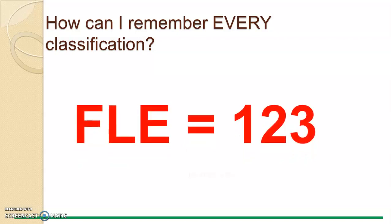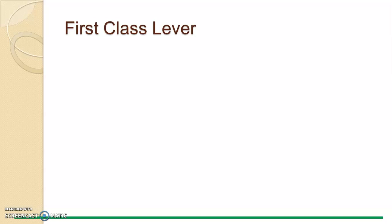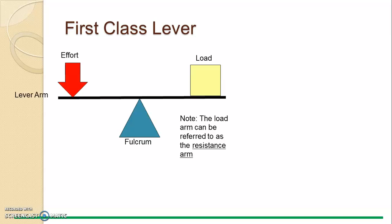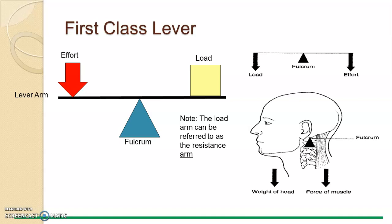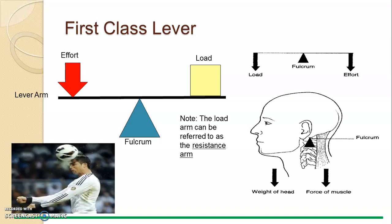And if you thought this, you are correct. F equals 1, 2, 3. All right, so first class lever, fulcrum needs to be in the middle, load and effort on either sides. We use the nodding of the head, the movement of the head forwards and backwards in order to depict this classification of lever.